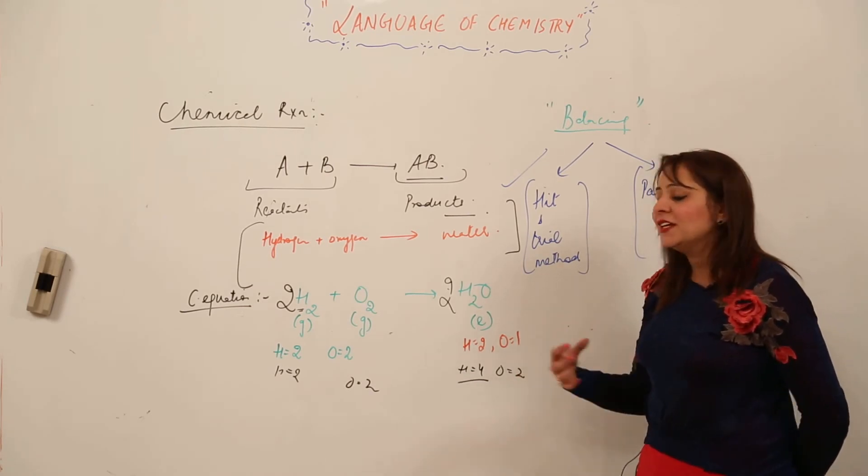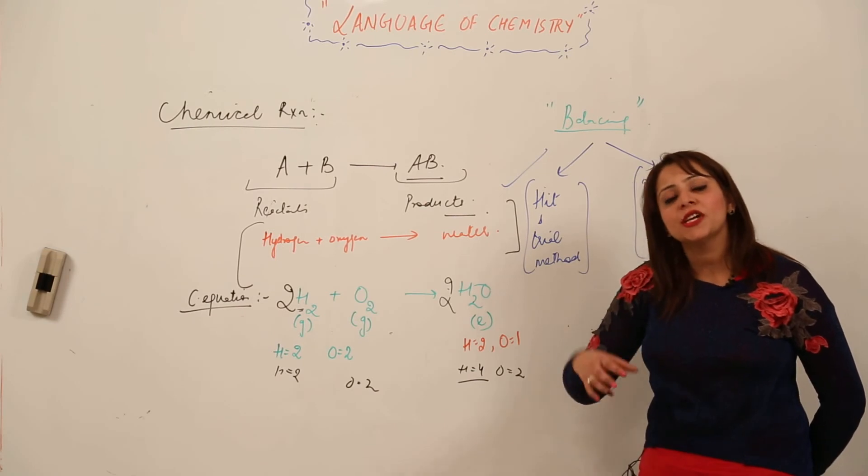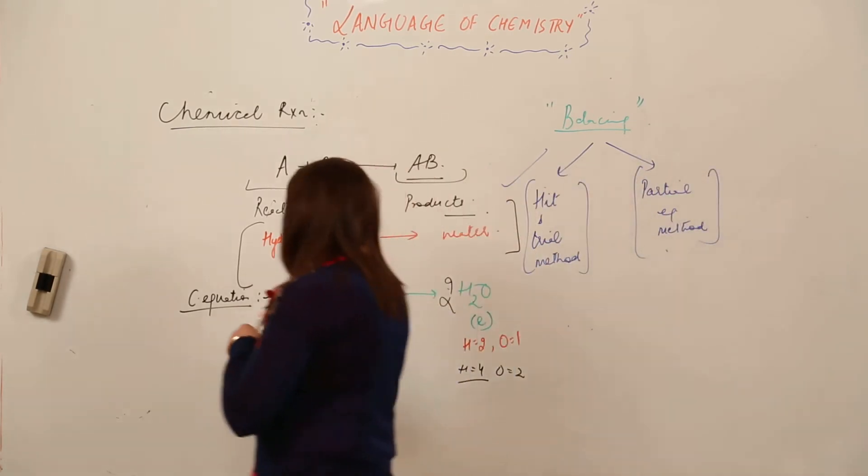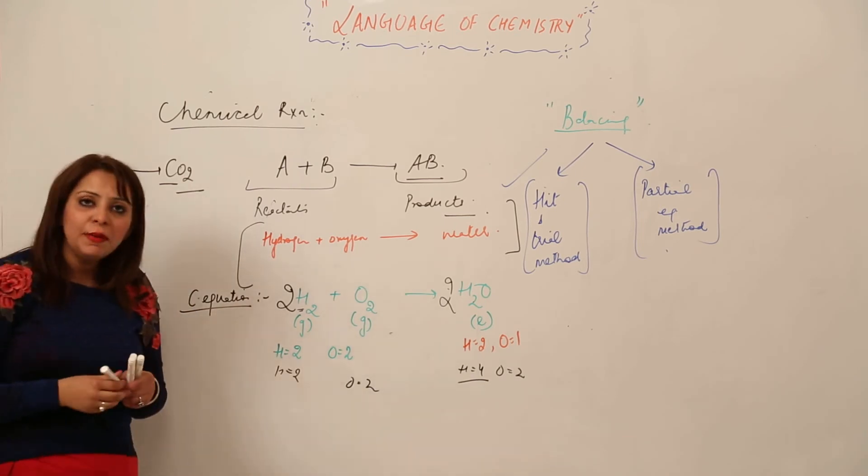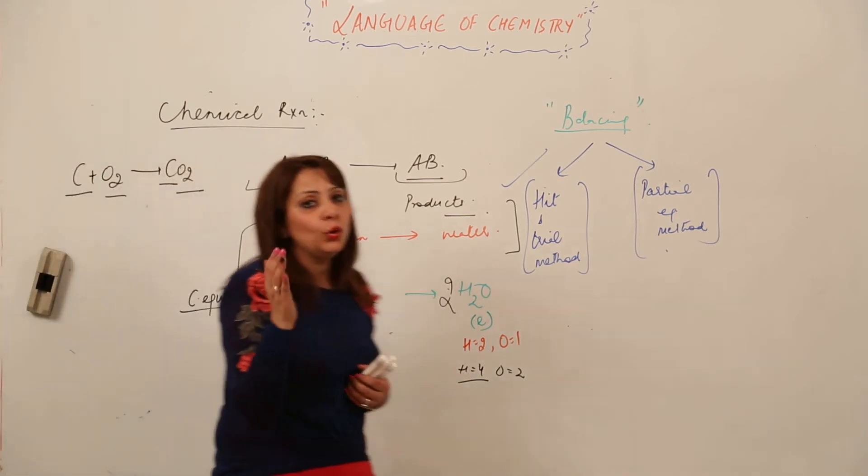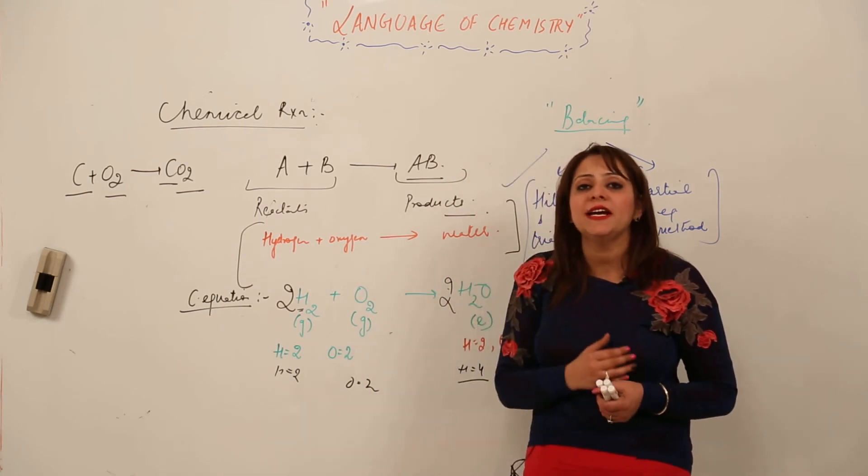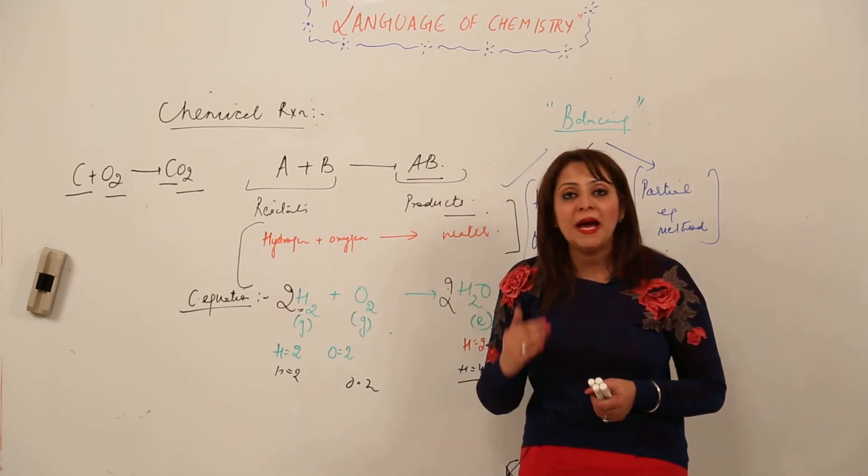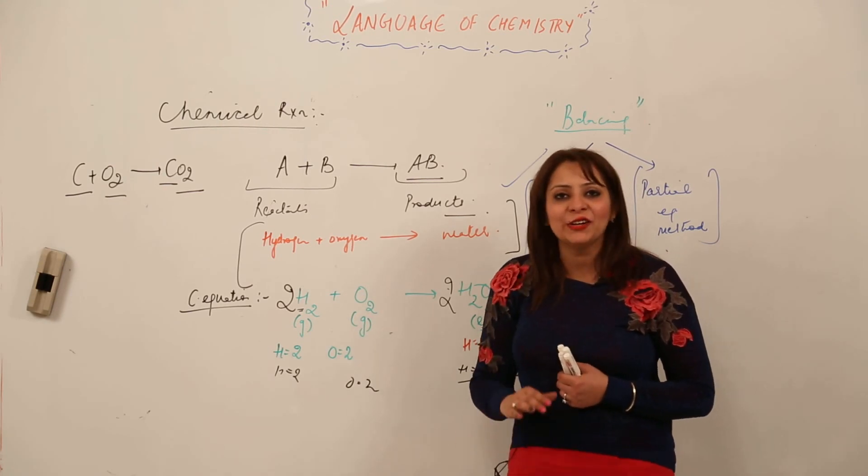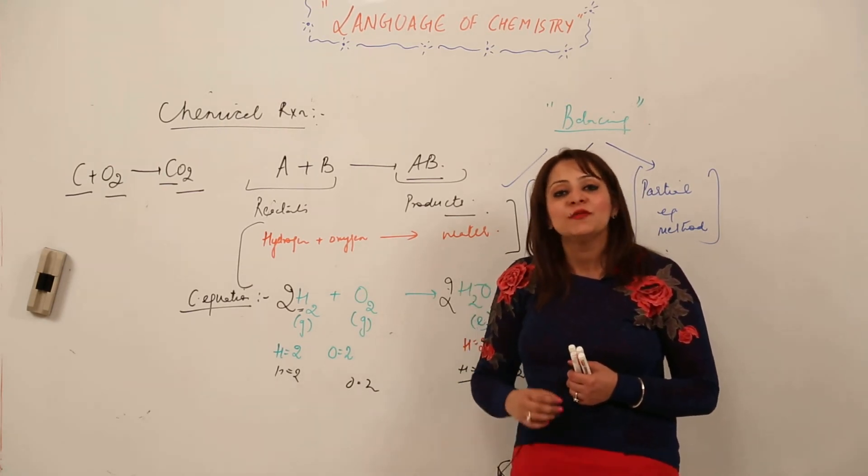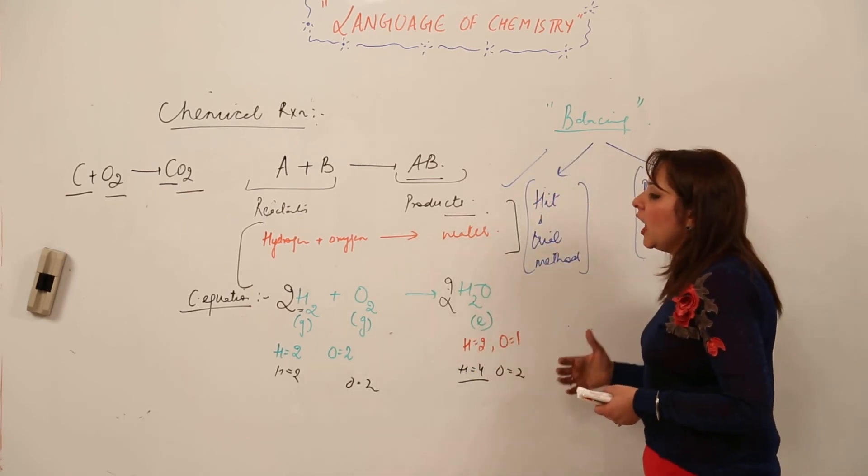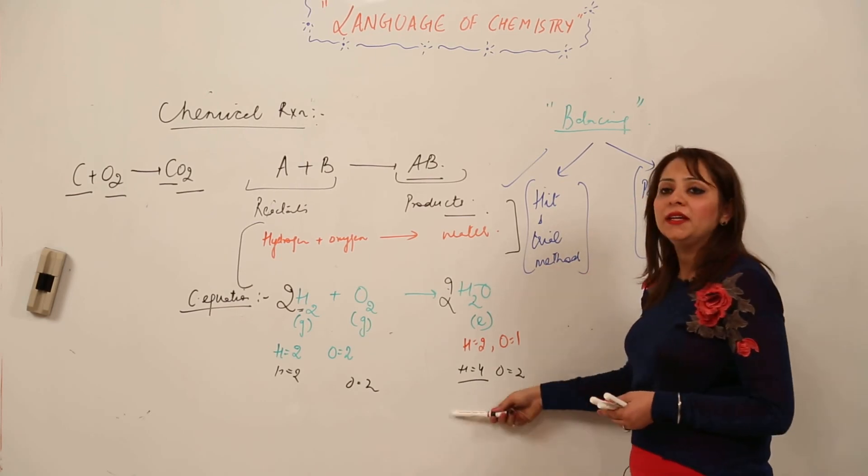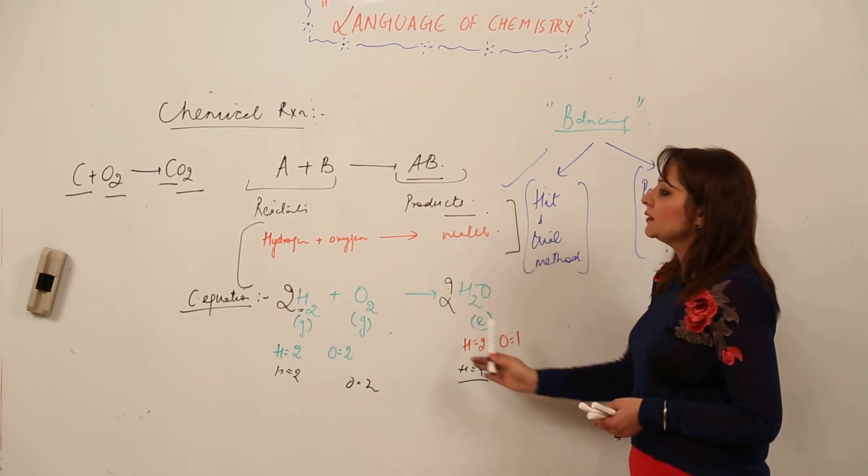Balancing is not always required because sometimes equations are already balanced. For example, C plus O2 gives CO2. You can see there's 1 carbon, 1 carbon, 2 oxygen, 2 oxygen—this reaction is already balanced. Balancing is required only when the atoms on left and right sides are not balanced. This is the hit and trial method by which you can balance chemical reactions.